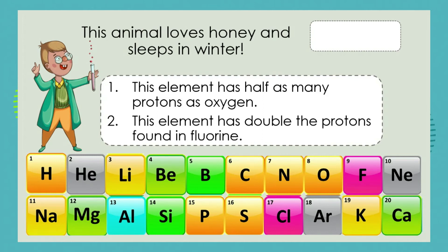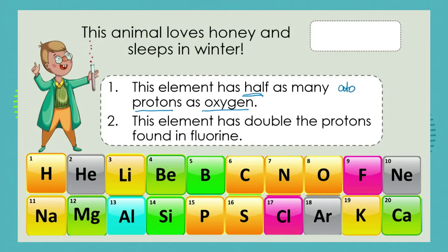Our first challenge question: this animal loves honey and sleeps in winter — what is that animal? We have two clues to help us. You may already think you know the answer. Our first clue reads: this element has half as many protons as oxygen. Remember, how do we know how many protons an atom has? The number of protons is reflected in the atomic number.